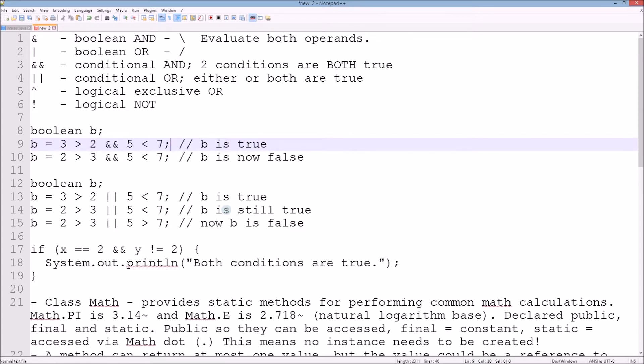Underneath we have 2 is greater than 3, and we stop right there. We don't even care about anything that's happening over here. The conditional AND only evaluates the left-hand side - if it's true, if it's not, it returns false.